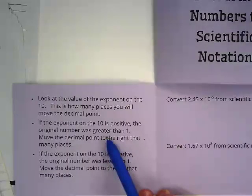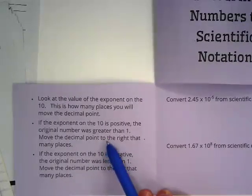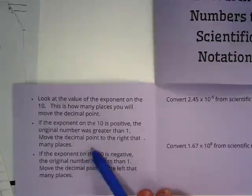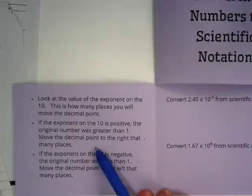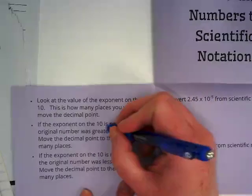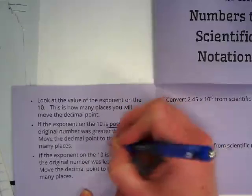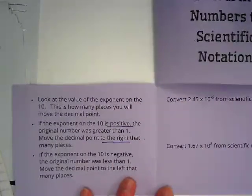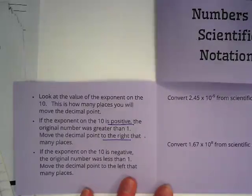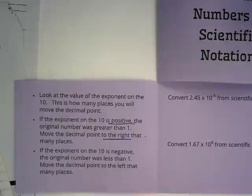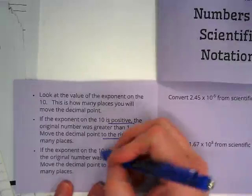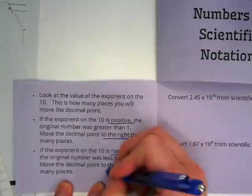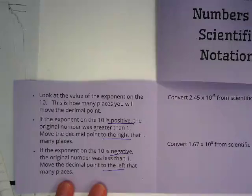If the exponent on the 10 is positive, the original number was greater than 1. Move the decimal point to the right that many places. So I want you guys to underline that. If the exponent is positive, you move to the right. Makes sense if you think about a number line, doesn't it? Things that are positive are to the right of zero and things that are negative are to the left. So if the exponent is negative, we move the decimal point to the left.